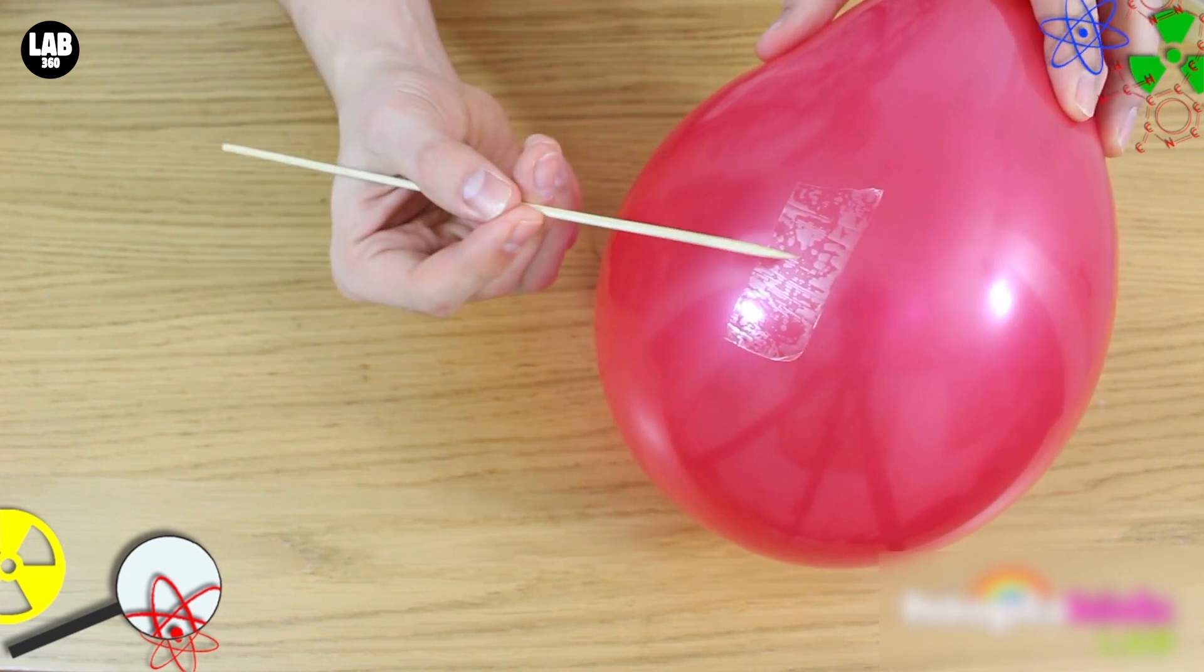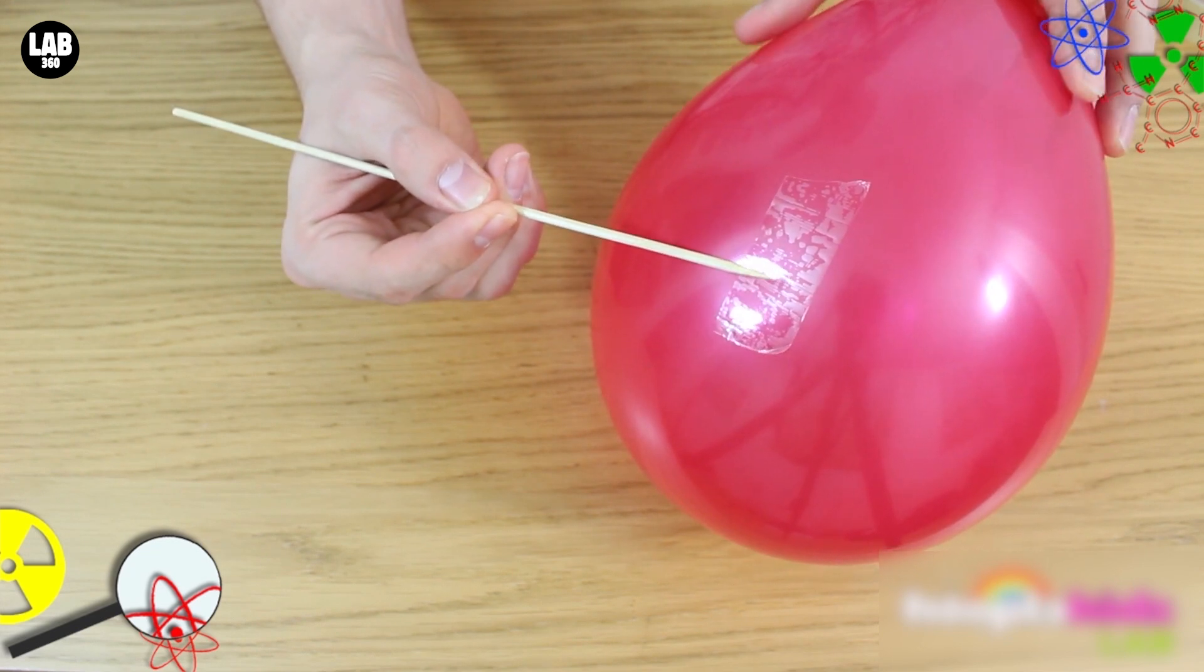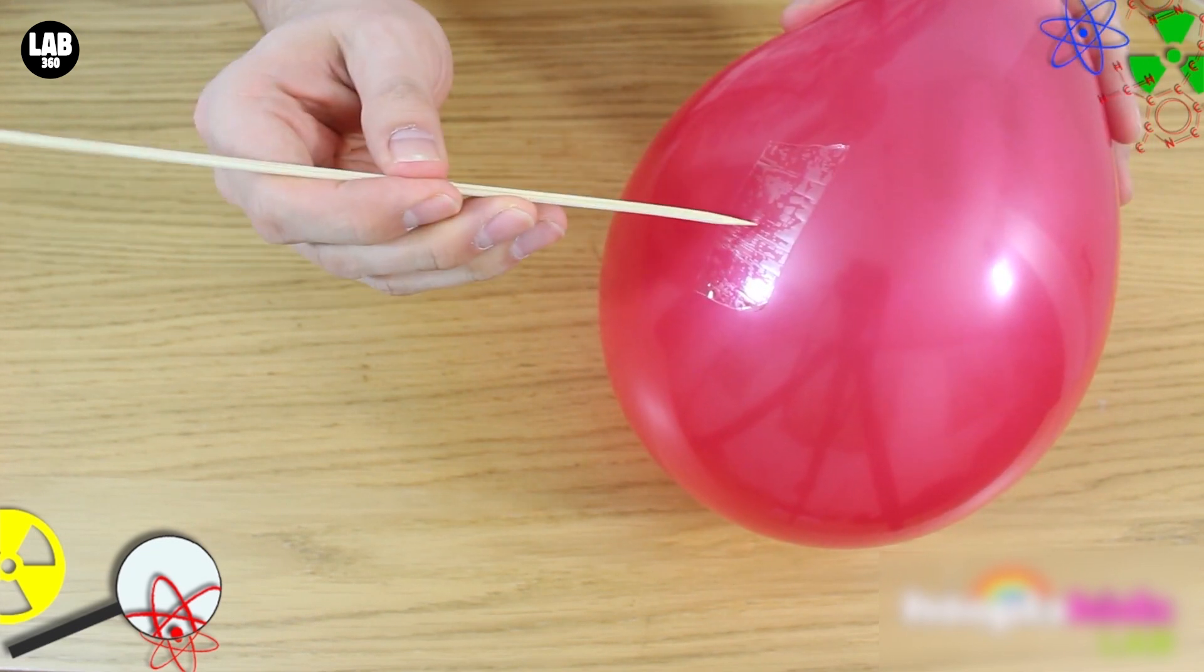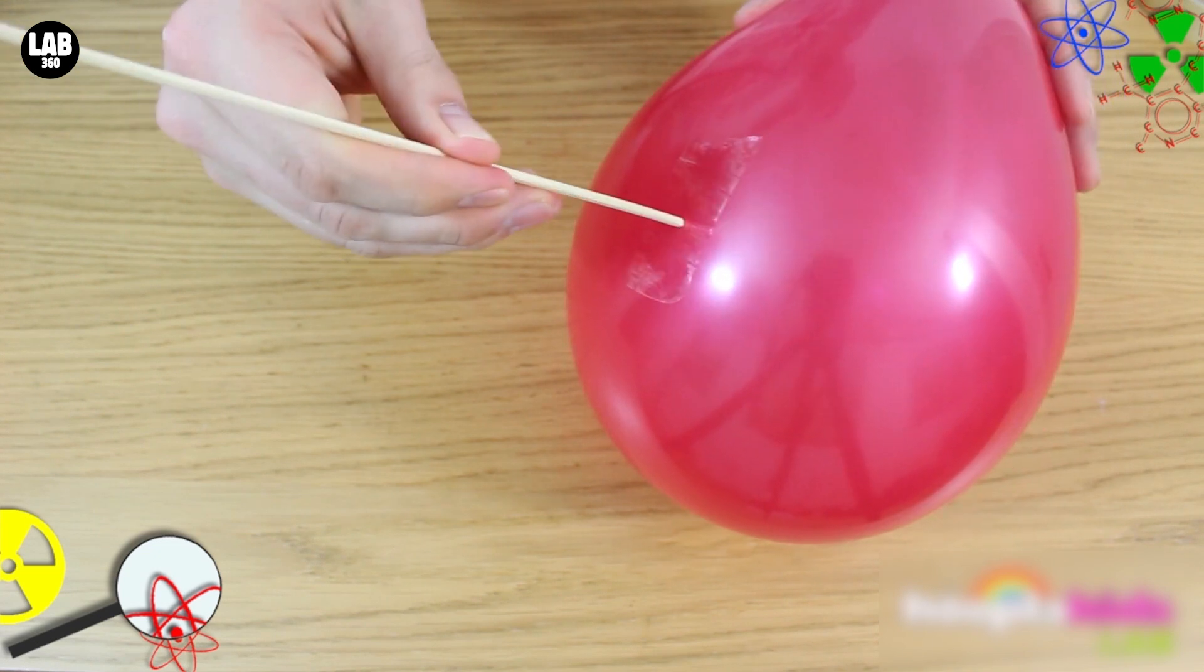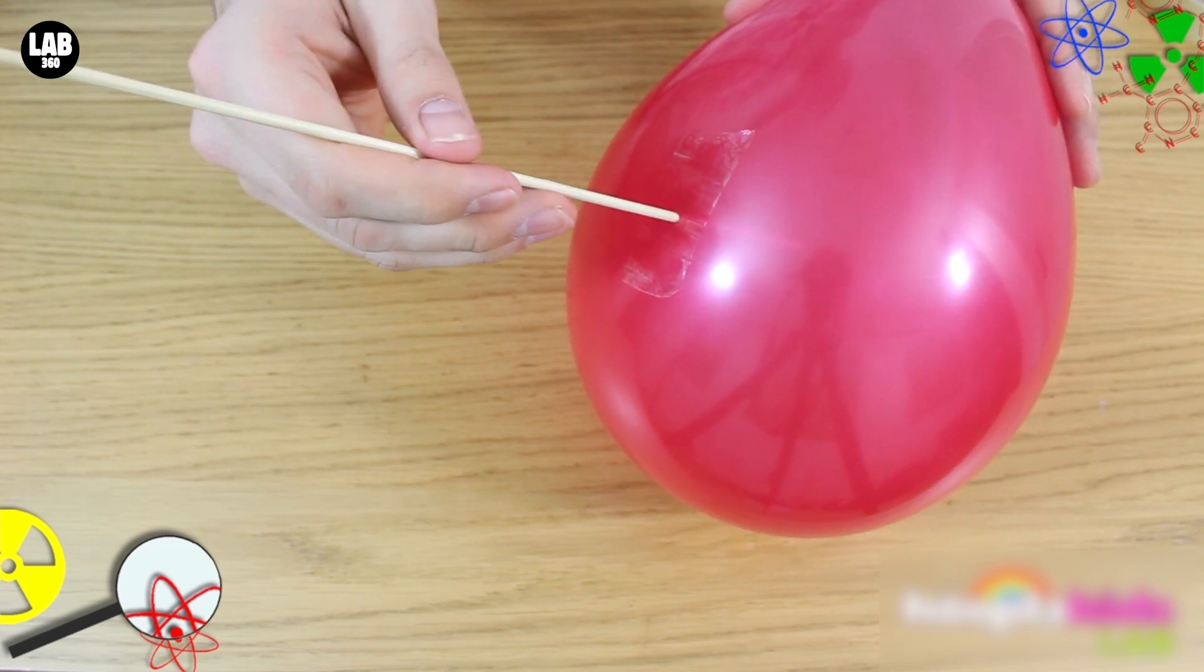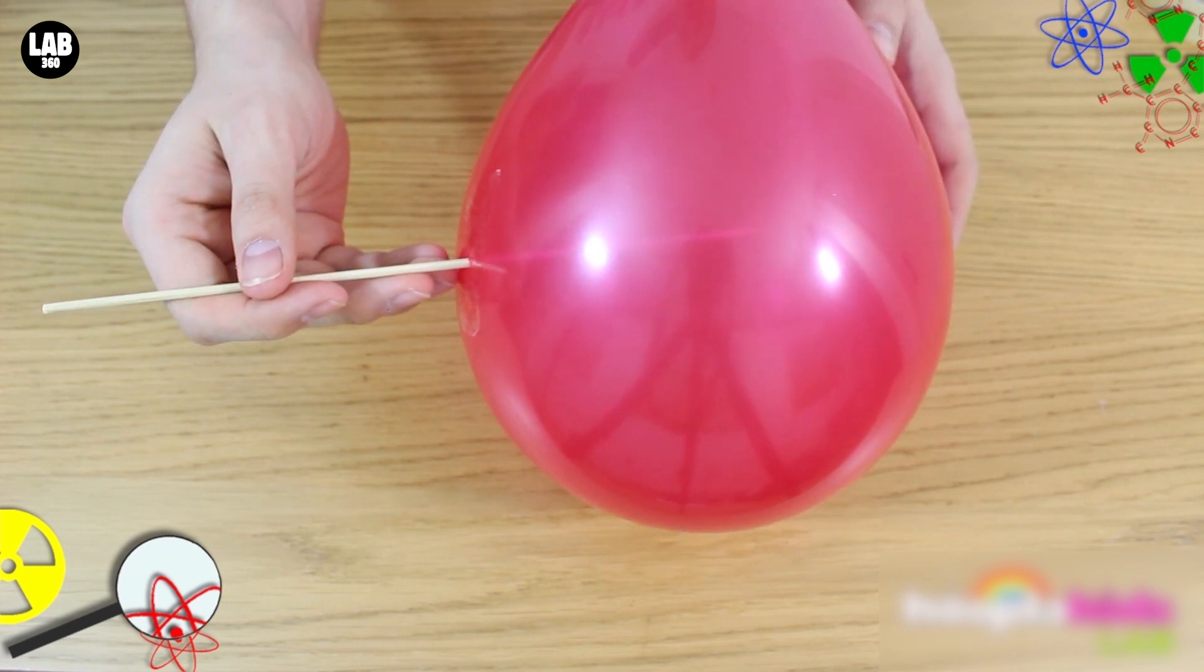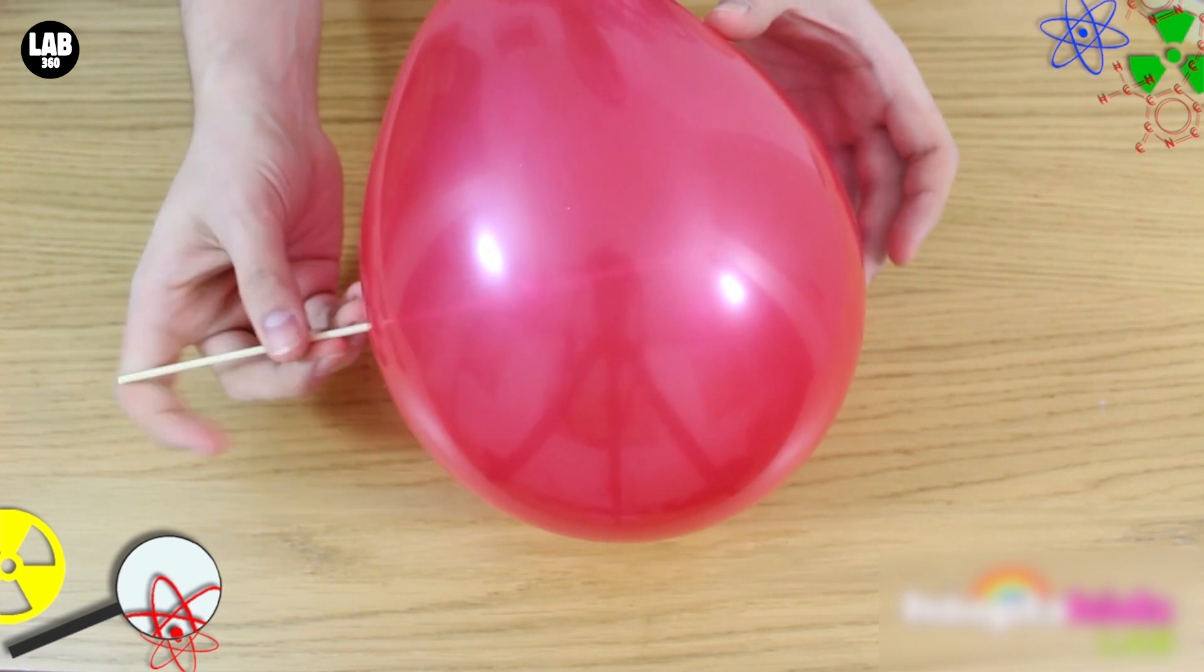Then take your skewer, and very carefully, very slowly, push the skewer through the balloon. You might want to try twisting it slightly just as you do this. You'll see that the skewer goes all the way through the balloon, without the balloon popping.